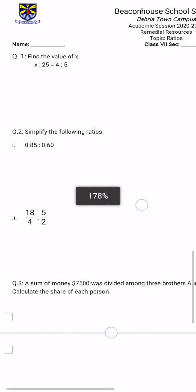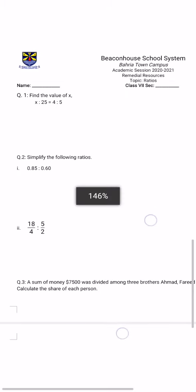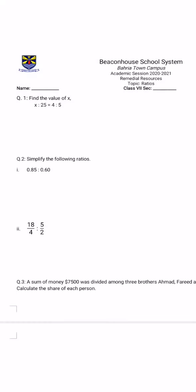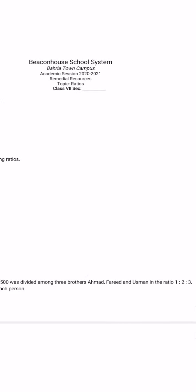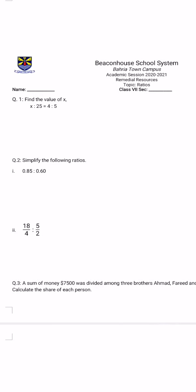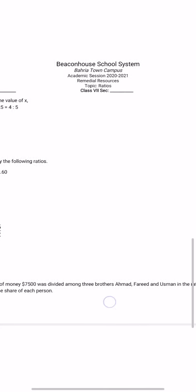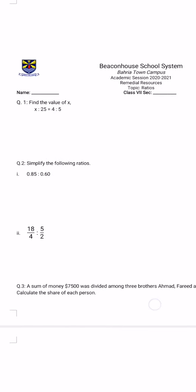Now a very important question here, and we have discussed a lot about these types of questions in the class as well. A sum of money which is $7500 is to be divided among three brothers Ahmad, Farid, and Usman in the ratio 1 ratio 2 ratio 3, and we have to calculate the share of each person.